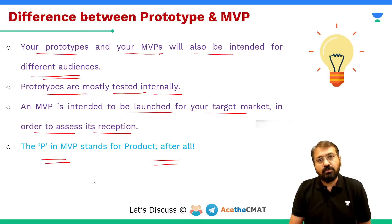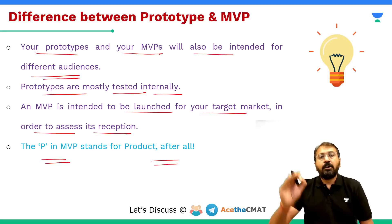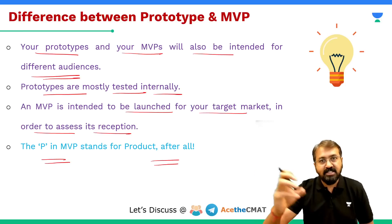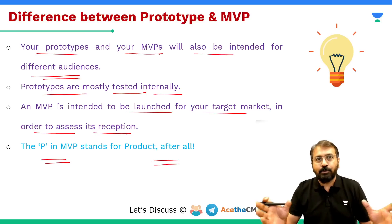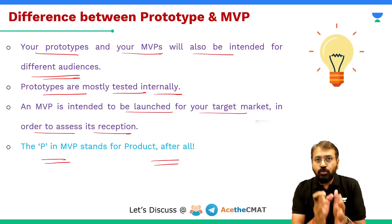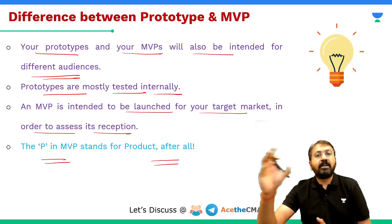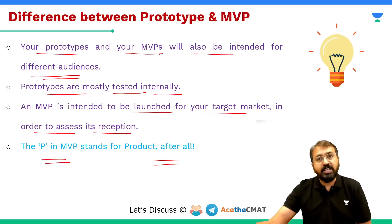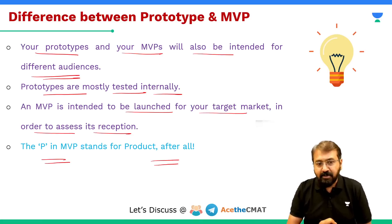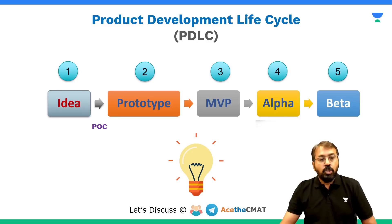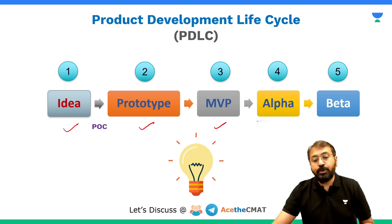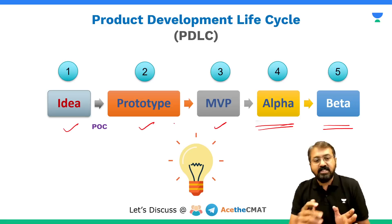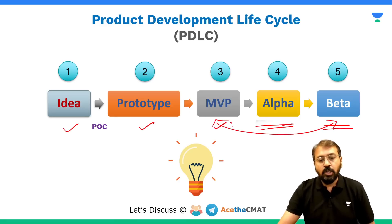To summarize: first comes the idea, then proof of concept (POC), then you create a prototype — giving physical form to your idea, possibly creating multiple and scrapping a few. Once convinced, you create a Minimum Viable Product with bare minimum features and launch it in the market to get customer feedback. After that comes alpha testing and beta testing. In the next video, we'll explain what alpha version and beta version are and how MVP is different from beta.